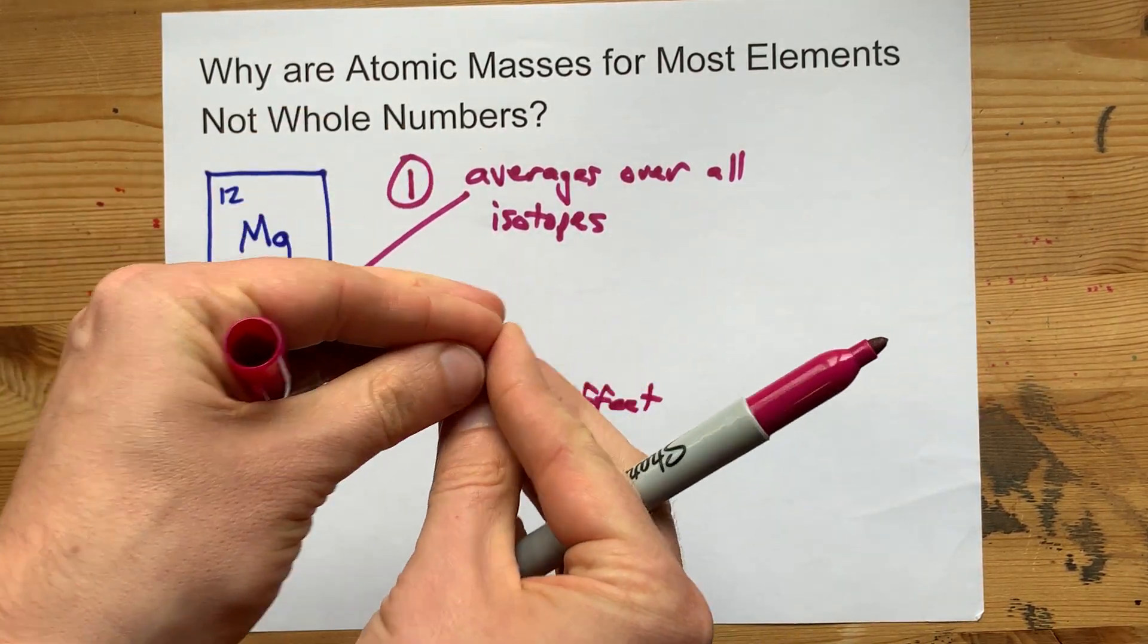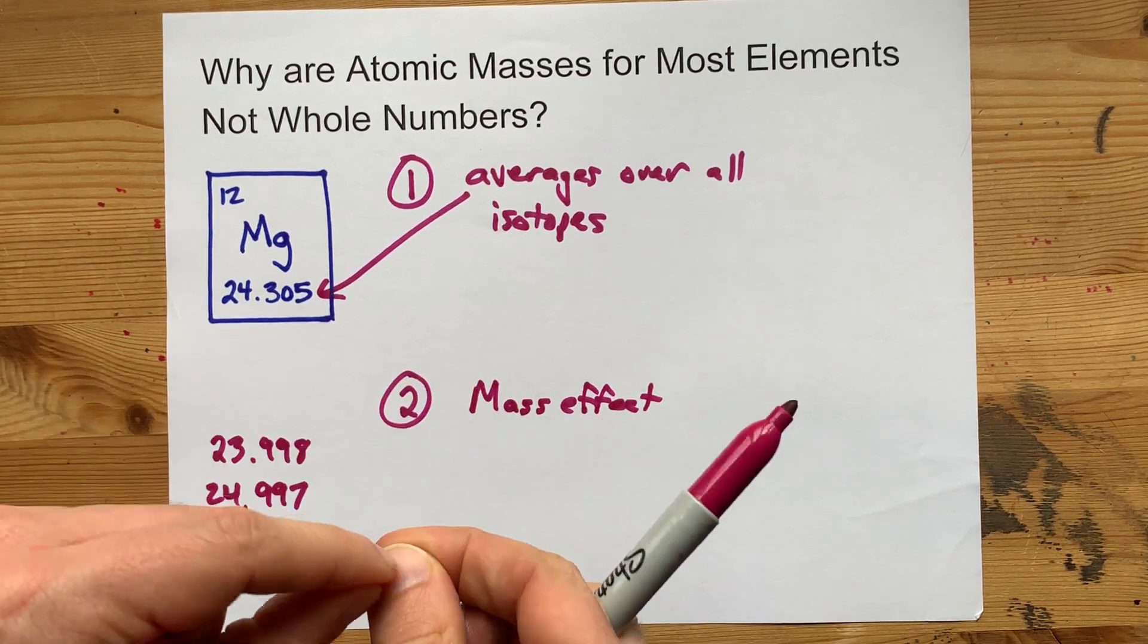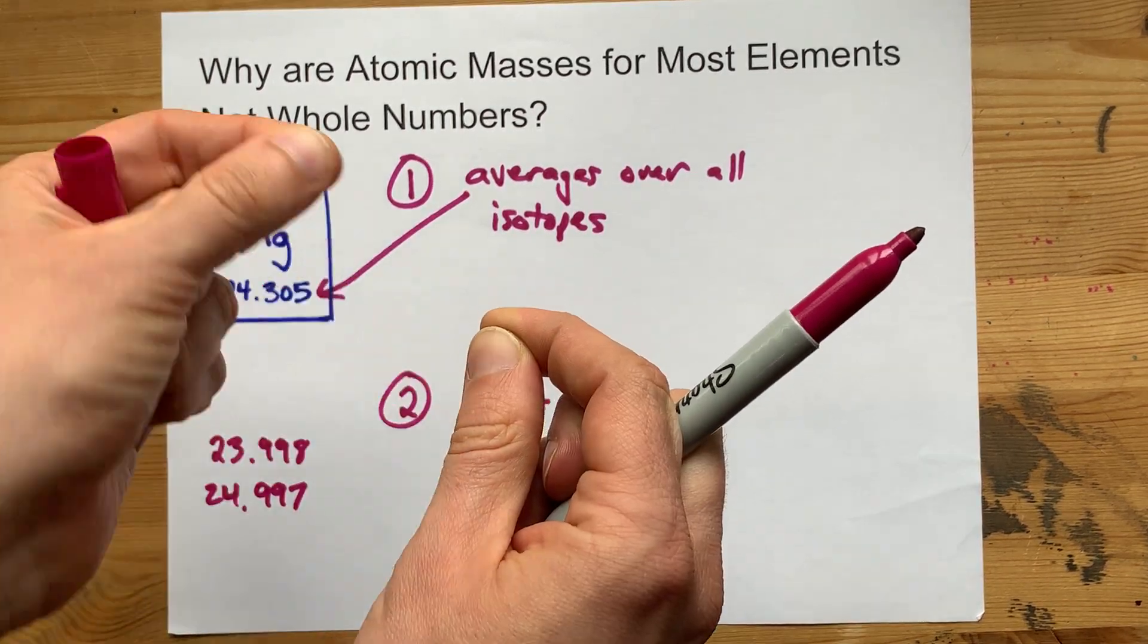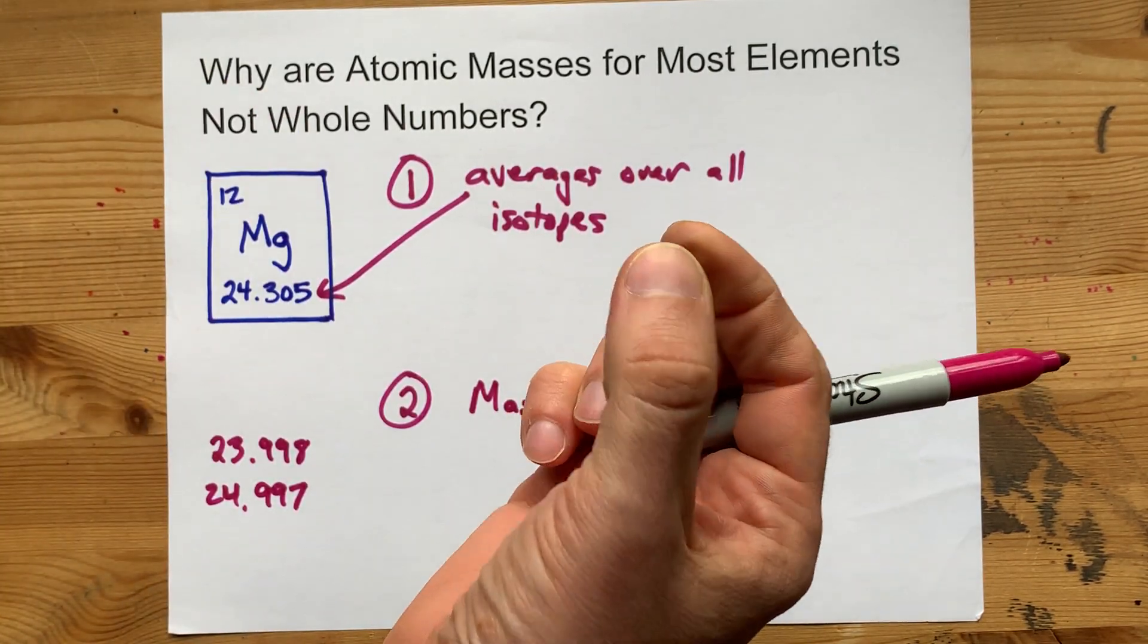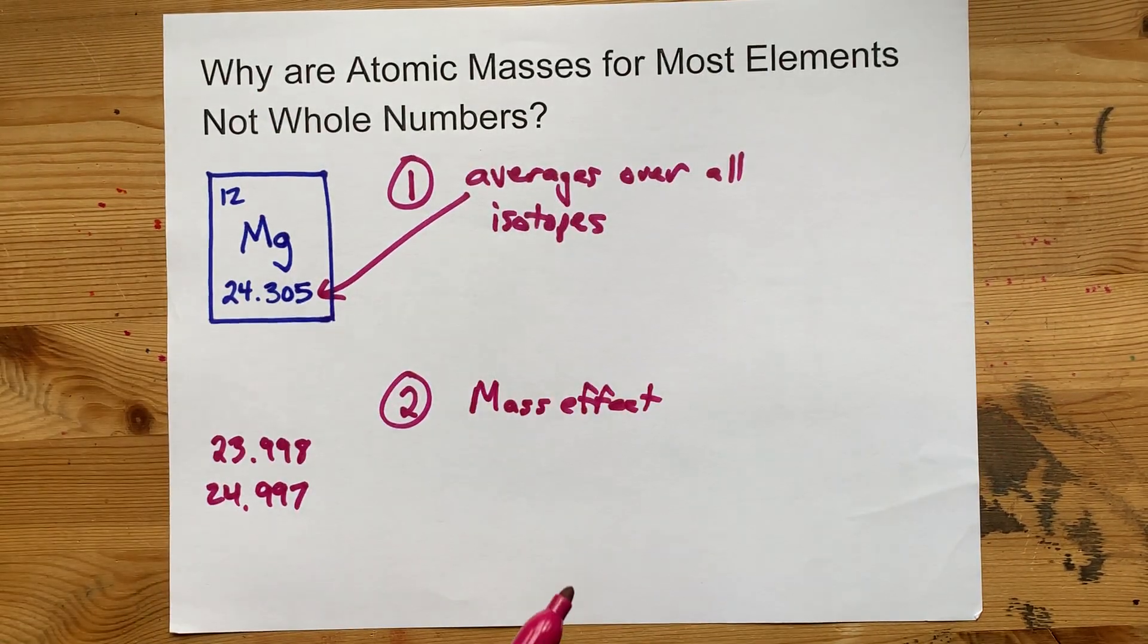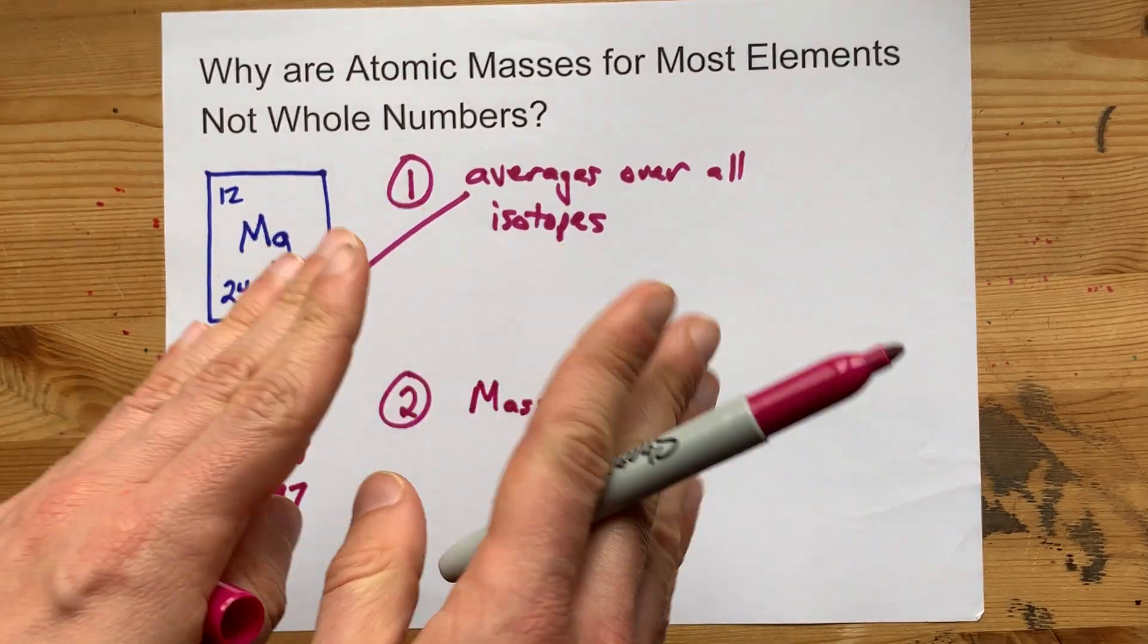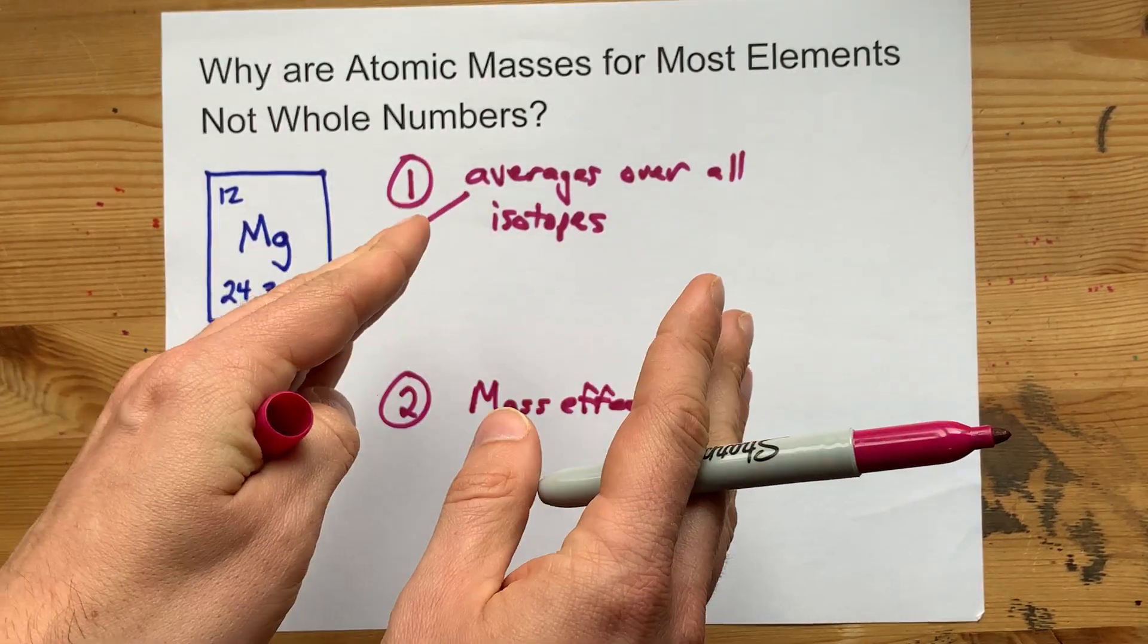when you put protons and neutrons together, the actual mass comes out to a little bit less than the whole masses of a single proton and single neutron put together, just because of the way these fundamental forces work.